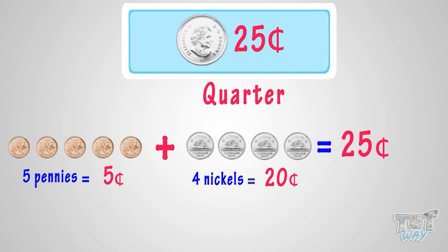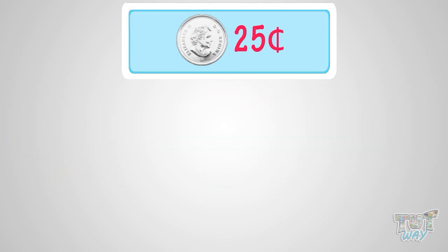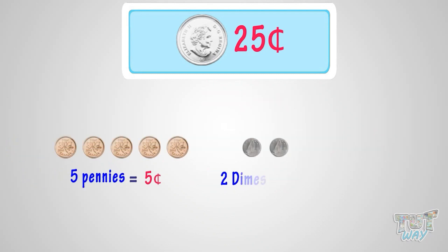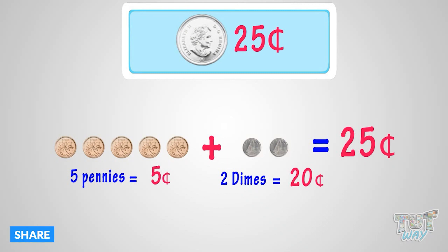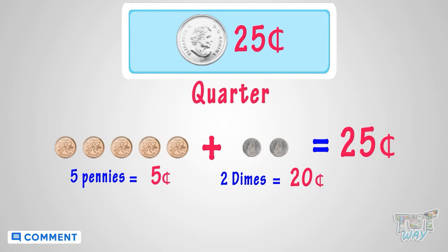Let's learn one more way: five pennies and two dimes. As five pennies make five cents, and two dimes make twenty cents, so in total we will have twenty-five cents. Five cents plus twenty cents equals twenty-five cents. So we can exchange this set of coins too for a quarter.